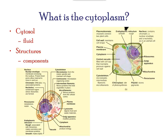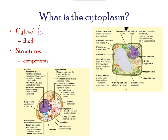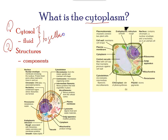Even though the cytoplasm consists of 70–80% water, it has a semi-solid consistency which comes from the proteins within it. If you were to remove all organelles from a cell, would the plasma membrane and cytoplasm be the only components left?